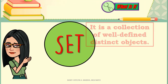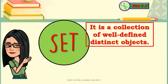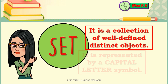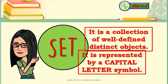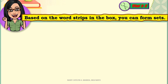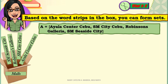A set is a collection of well-defined distinct objects. It is represented by a capital letter symbol. Based on the word strips in the box, we were able to form sets. For example, set A is a set of malls in Cebu City — Ayala Center Cebu, SM City Cebu, Robinson's Galleria, and SM Seaside City.